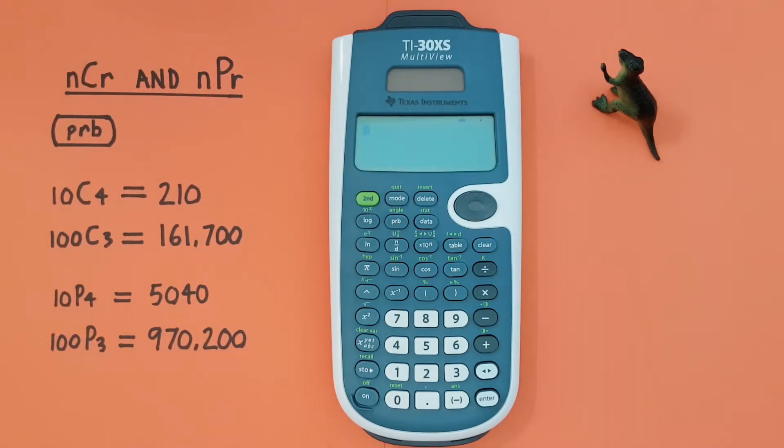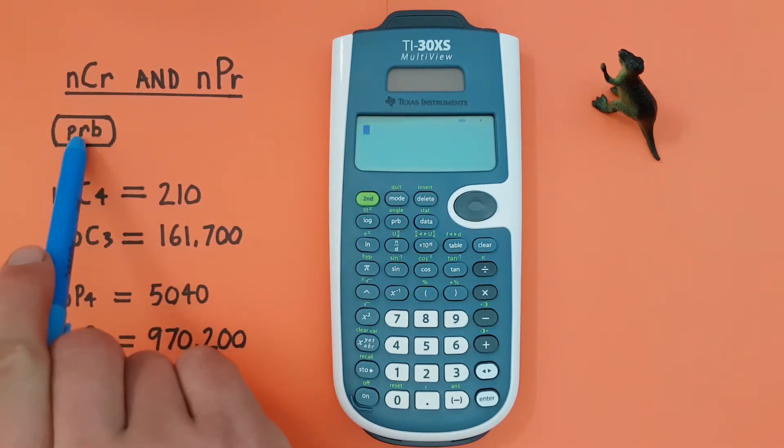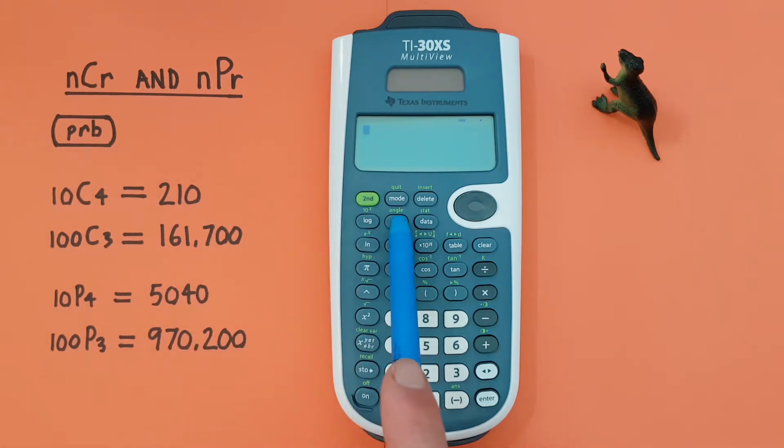Hello and welcome to HDCalx. I'm Rick and in this video we're going to have a look at where to find and how to use the combinations and permutations function on the TI30XS multi-view calculator. To do this, we'll need to use the PRB key, or the probability key that looks like this, located here.